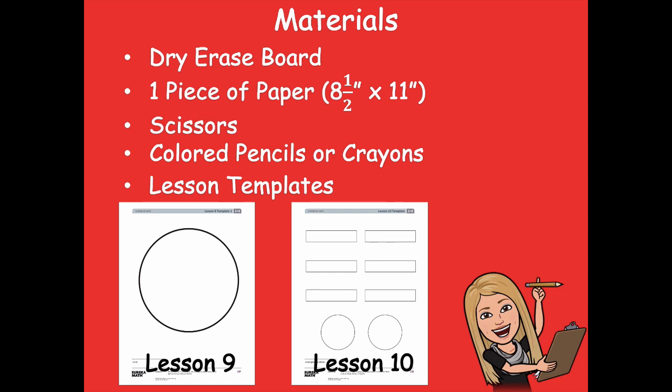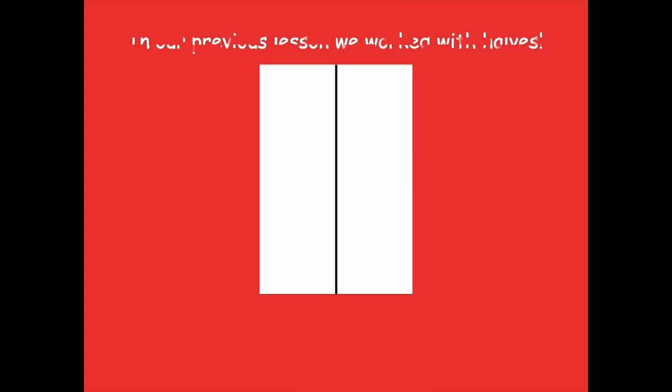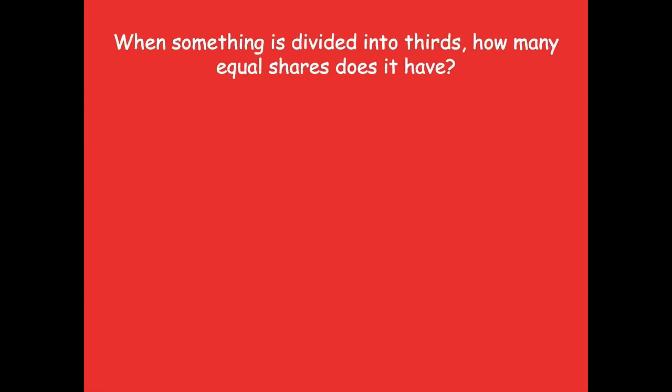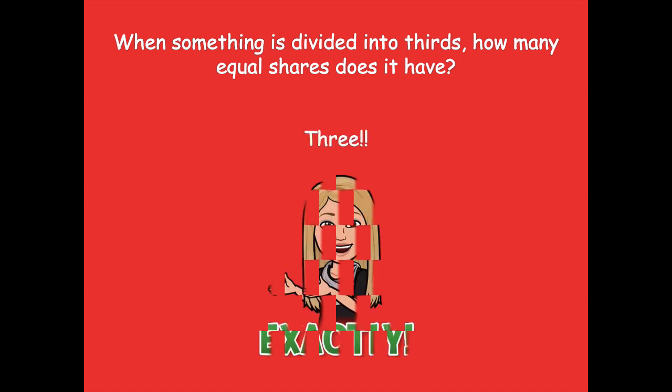Just a little note — if you don't have your circle from yesterday, that's okay, we can talk about it together. In our previous lesson we worked with halves. Today let's look at thirds. When something is divided into thirds, how many equal shares does it have? When we're dividing something into halves it had two equal shares. So how many equal shares does a shape have if we divide it into thirds? It is three — exactly, you guys got it.